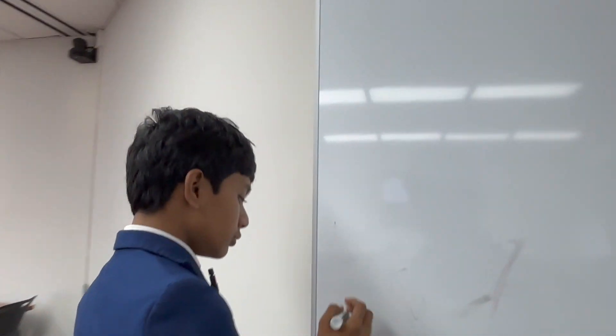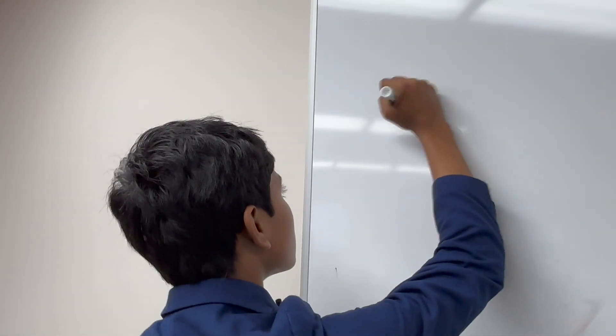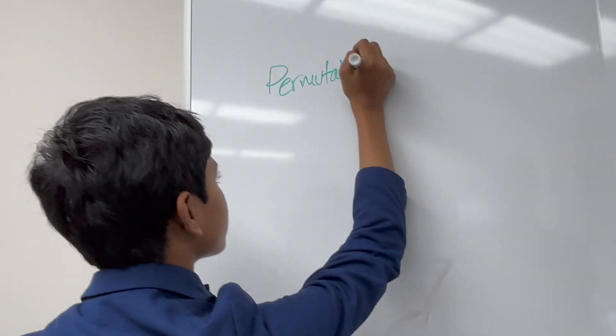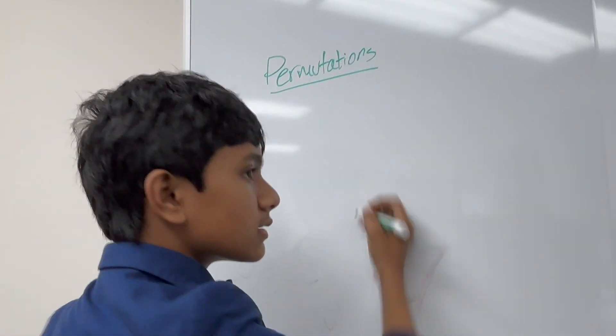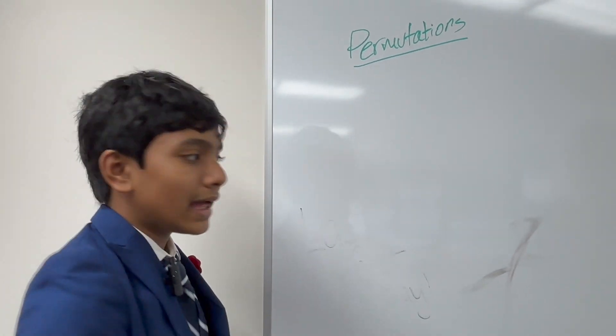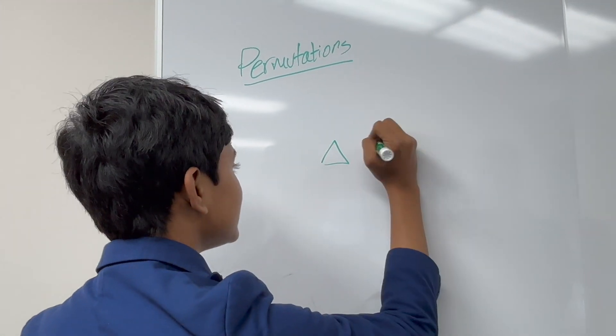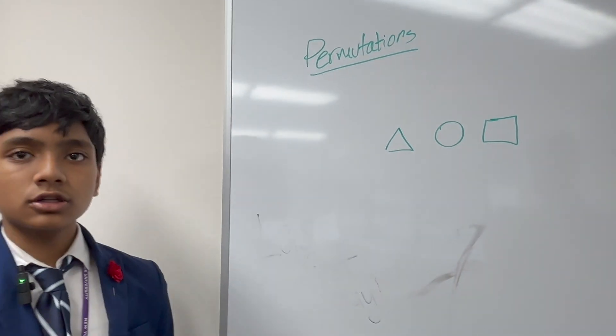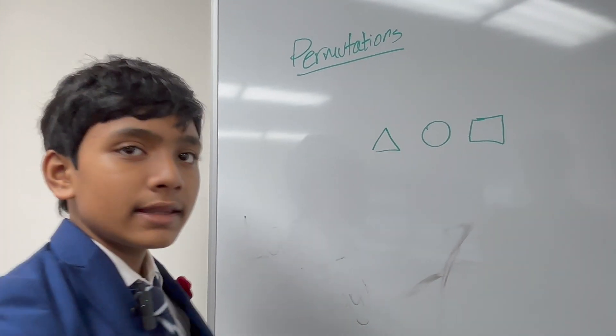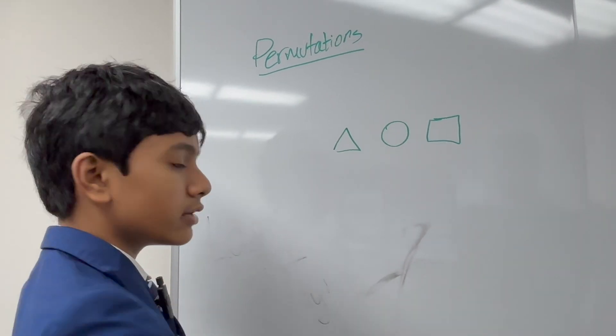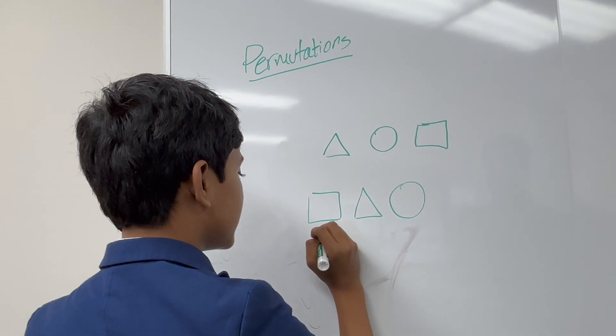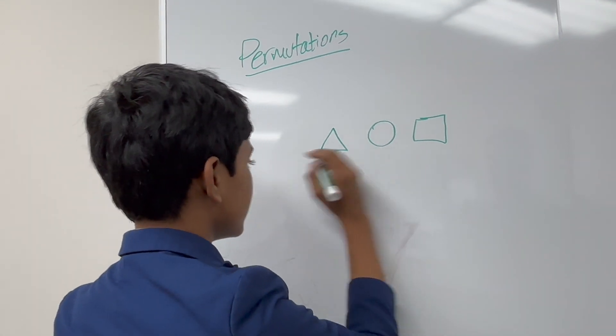So, what is a permutation? Well, you probably remember from combinatorics class. If you have three distinguishable objects, like here, a triangle, a circle, and a square, then the number of different ways you can arrange them, the number of distinguishable ways you can arrange them, which goes something like this.